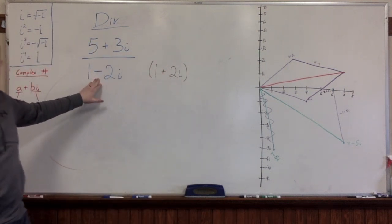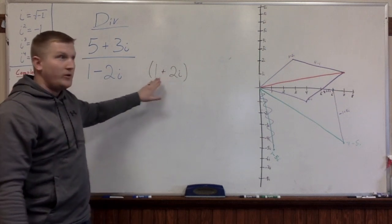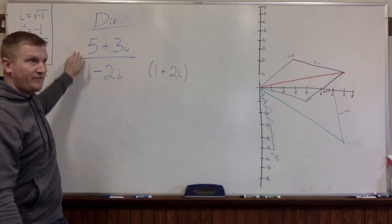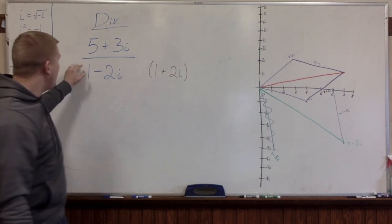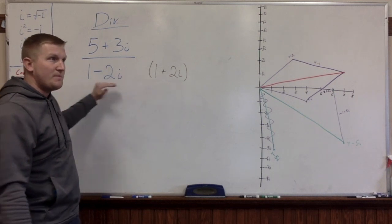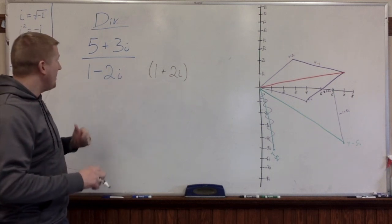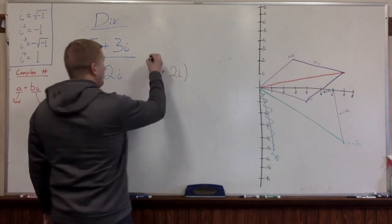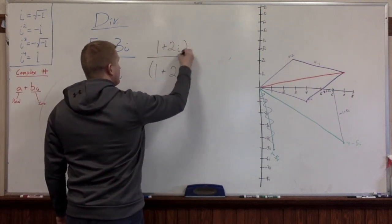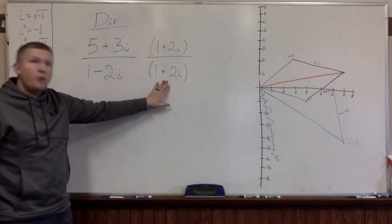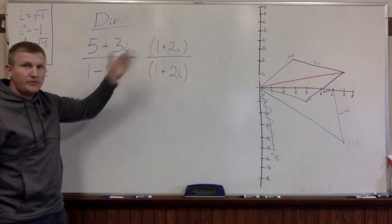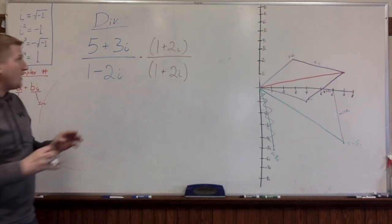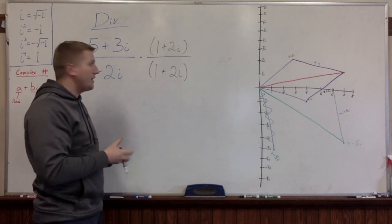We want to multiply the divisor by its complex conjugate, which means we have to multiply both the top and bottom by it — so the whole thing is essentially multiplying by 1. This lets us turn the division problem into a multiplication problem and then simplify from there.